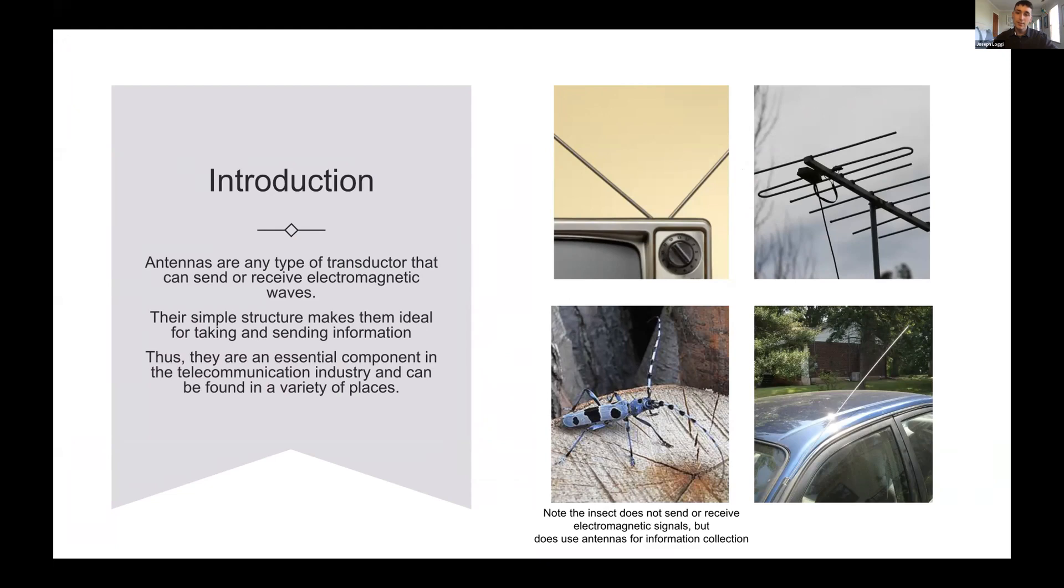To the right, we have a couple examples of antennas: one on a classic television, a Yagi antenna, and a car with a regular antenna. And for a little giggle, we have an insect with some antennas. These are used in a different way. They don't transmit any electromagnetic waves. However, they're used for olfactory. A good example with another biological component would be the eyeballs with the rods and cones, which take visible light and translate it into colors.